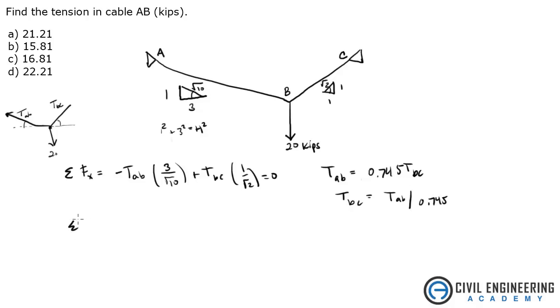So let's do the next equation, which is sum of the forces in the y direction. That gives us the tension in AB is positive, you're going up, times the y component, which is 1 over the hypotenuse, square root of 10.